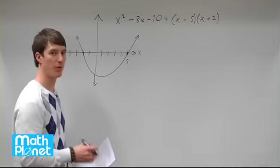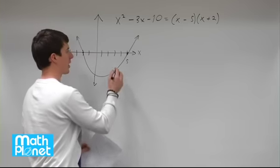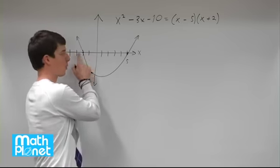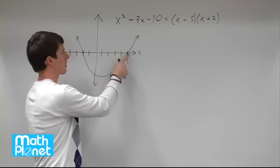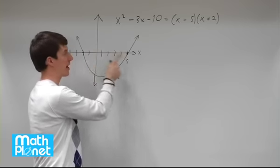Now to solve graphically, what that means is if you have the graph you want to solve which means where is this going to give us values of 0 for y. So solving again means where does this cross the x-axis.